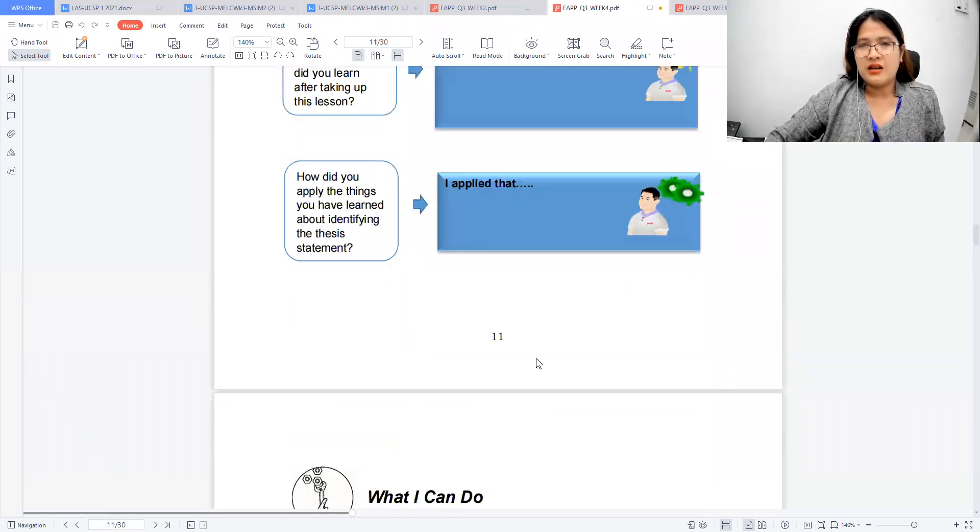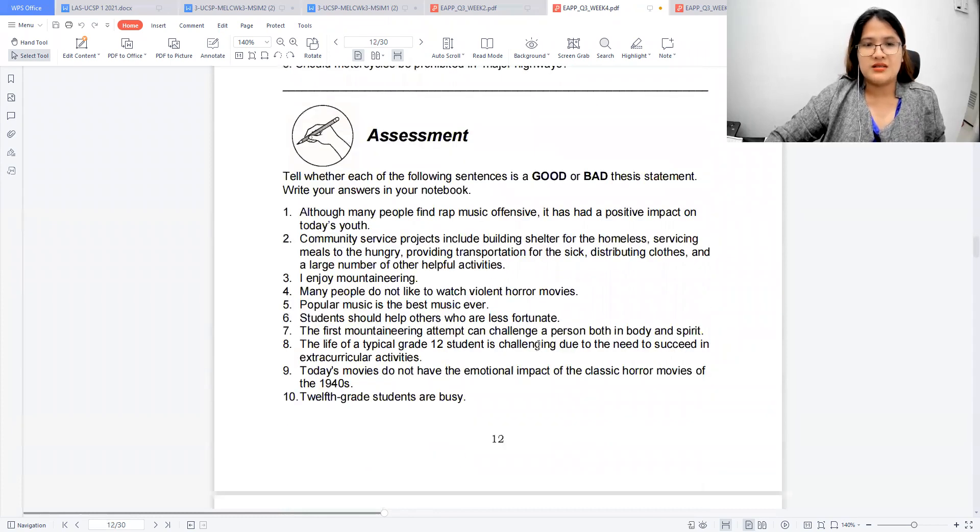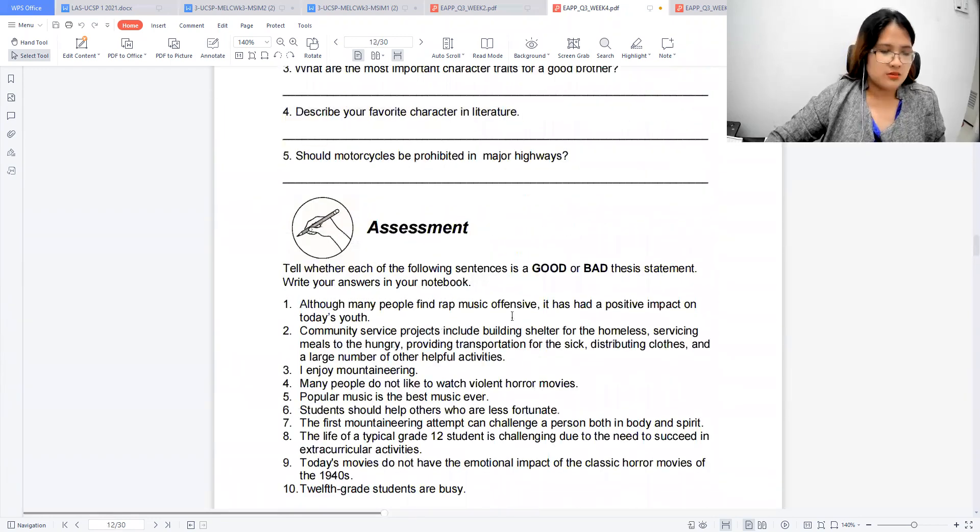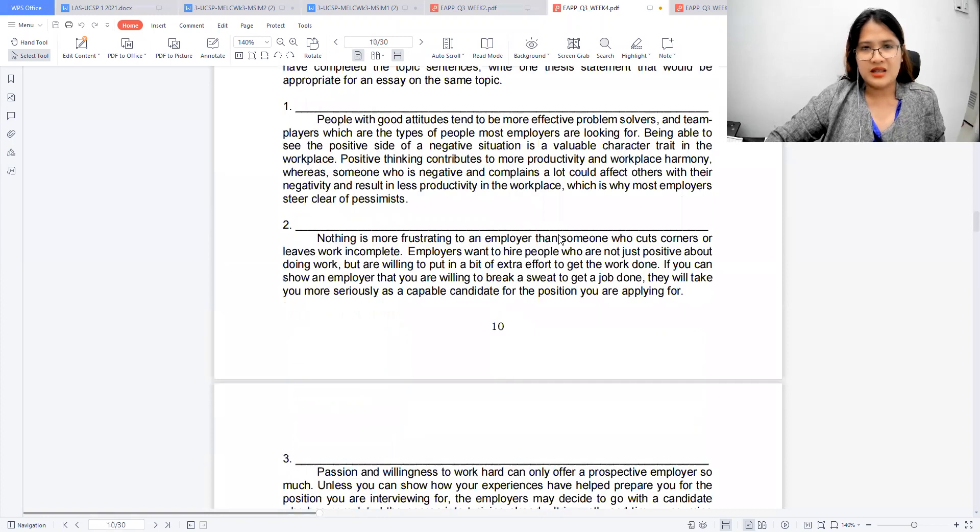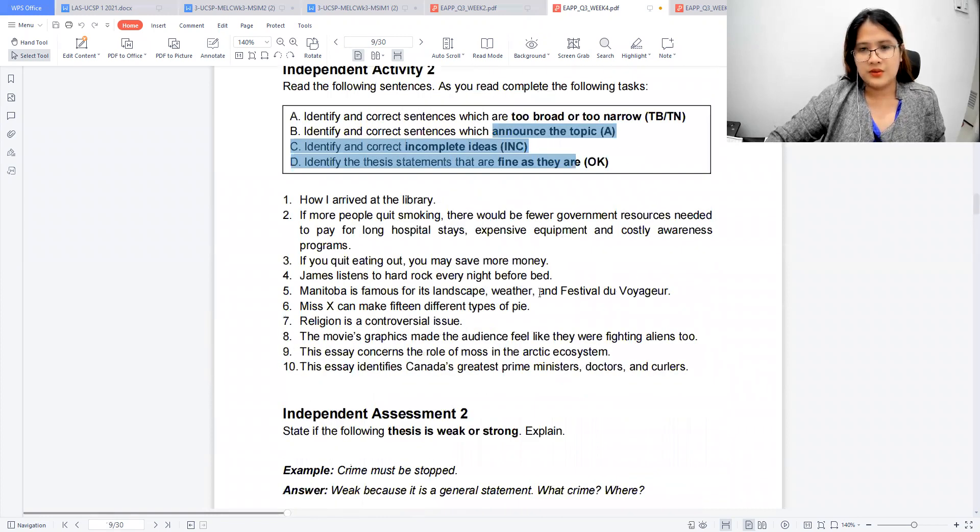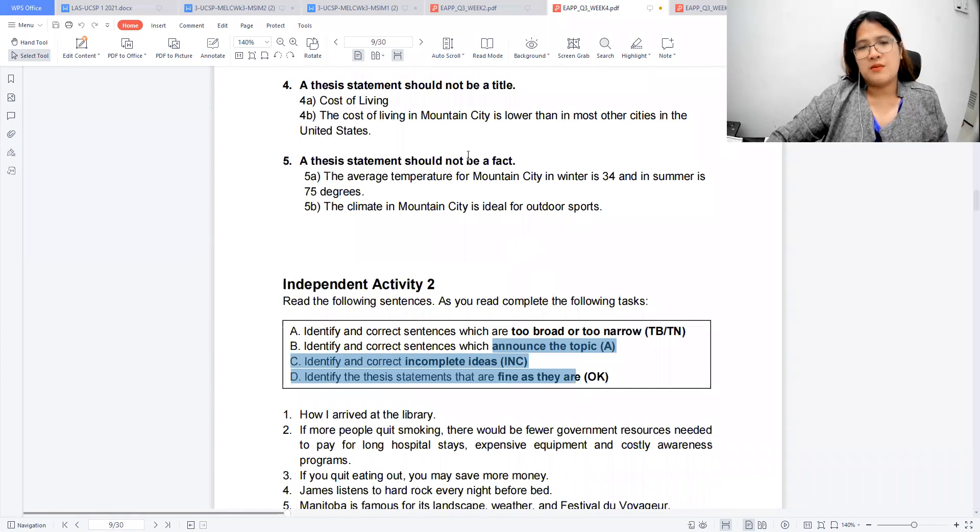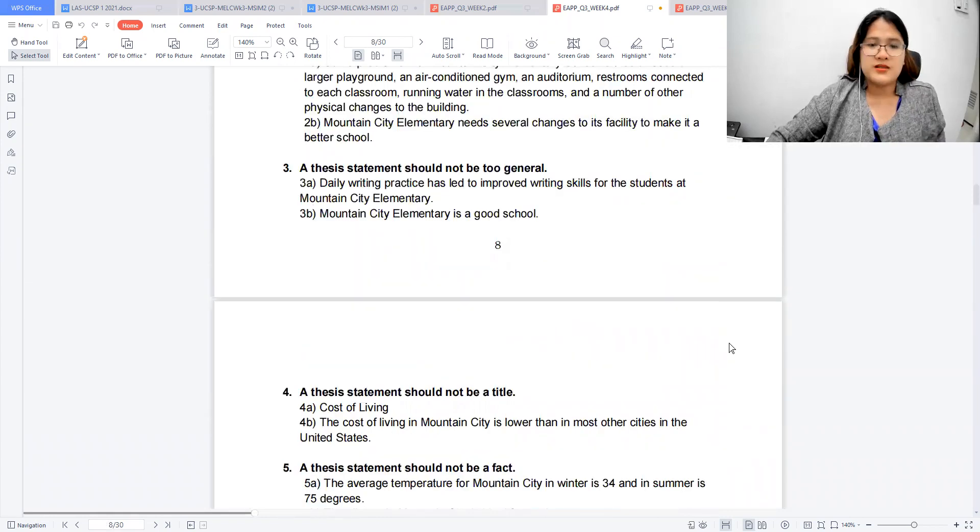So with that, you know how to determine a good thesis statement from a bad thesis statement. So I guess you could answer the rest already. Just make sure that you consider the given factors, like too narrow, too broad, announcing a topic, incomplete ideas, too wordy, too general. It's a fact or it's a title. So with that, I hope it's clear with you. If you have questions, don't forget to put your comment or ask me as your teacher, and then just comment what you've learned for today. But also don't also forget to like and subscribe. Thank you so much. See you.